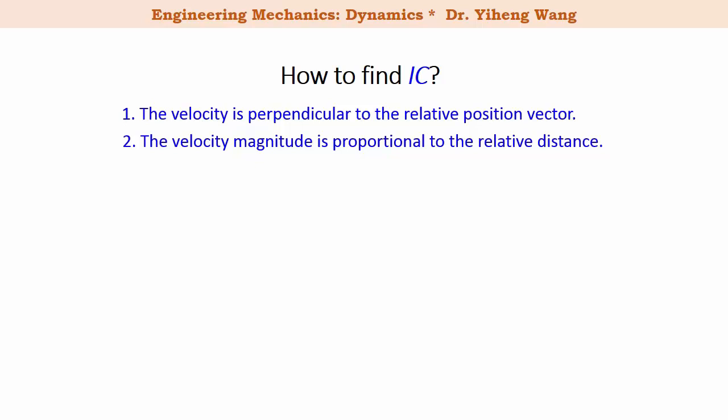In general there are three cases. First case: if you know the direction of the linear velocities of any two points in this rigid body and they are not parallel to each other, then if you draw the two lines that are perpendicular to these two velocity vectors respectively, the point of interception must be the instantaneous center of zero velocity, because this is the only way that the first condition can be satisfied.